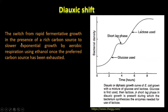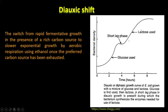Diauxic growth is defined as a switch from rapid fermentative growth in the presence of a rich carbon source – glucose – to slower exponential growth by aerobic respiration using ethanol, once the preferred carbon source is exhausted. The growth curve shows that the cell is using glucose as its carbon source. When glucose starts depleting – not completely exhausted, but starting to deplete – the cell will start this preparatory phase so that it can switch to lactose. In this preparatory phase the cell prepares itself, and hence there will be a short period of halt known as the lag phase. The cell will then start using lactose as its carbon source.